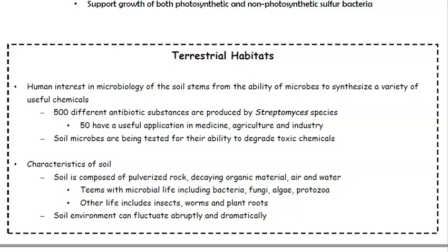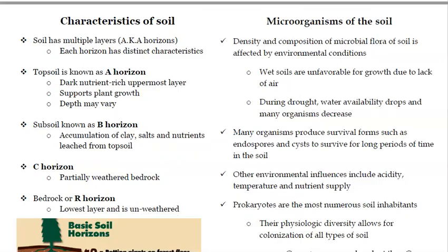The soil environment can fluctuate abruptly and dramatically depending on location. Soil has multiple layers called horizons. The topsoil is the A-horizon: dark, nutrient-rich, supports plant growth, and varies in depth. The subsoil, or B-horizon, is where clay, salts, and nutrients leached from the topsoil accumulate. The C-horizon is partially weathered bedrock, and the R-horizon is solid, unweathered bedrock — the lowest layer.